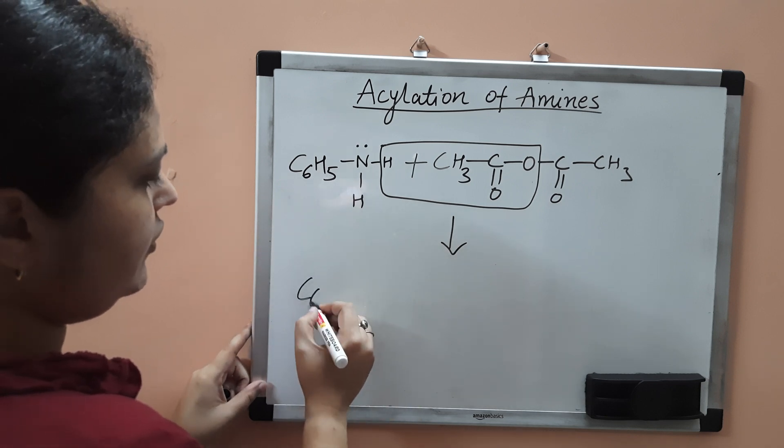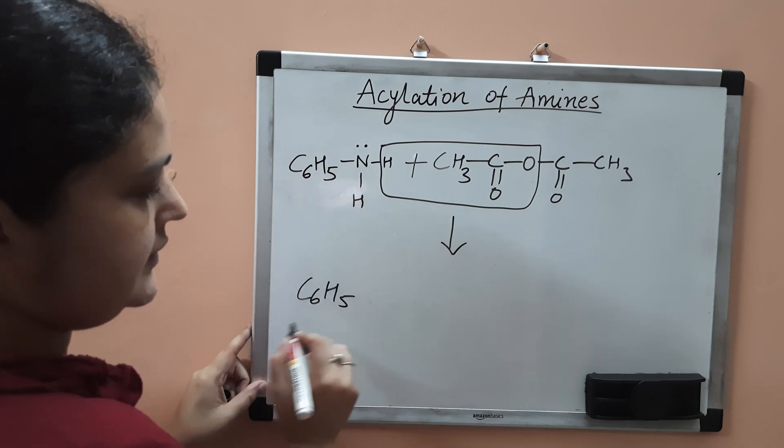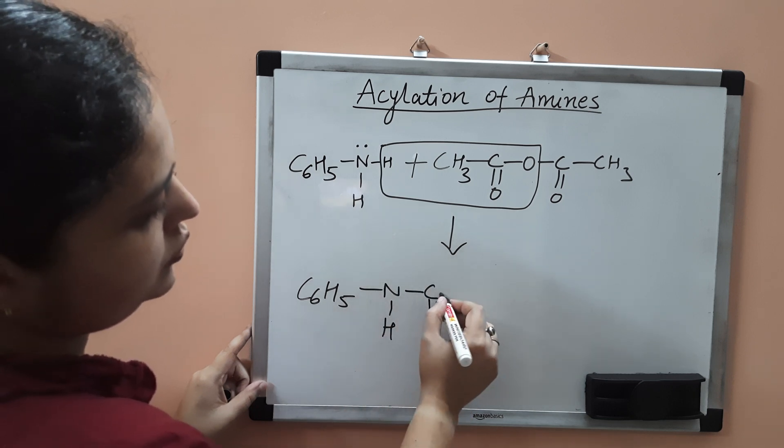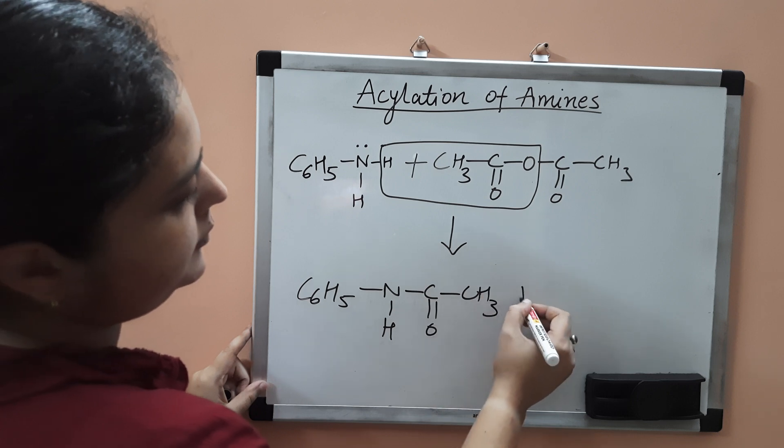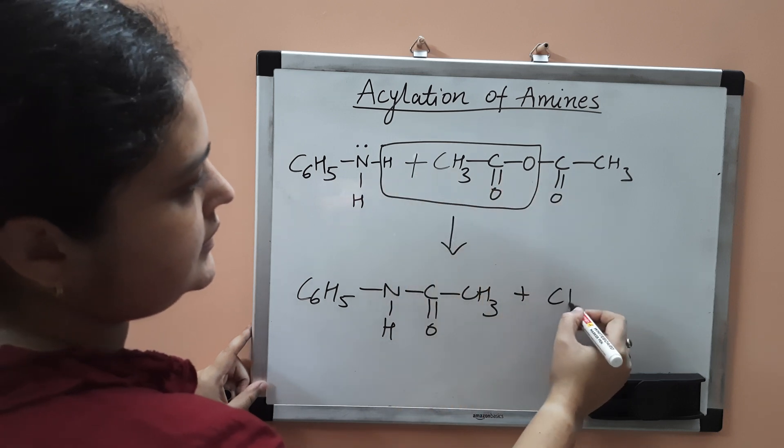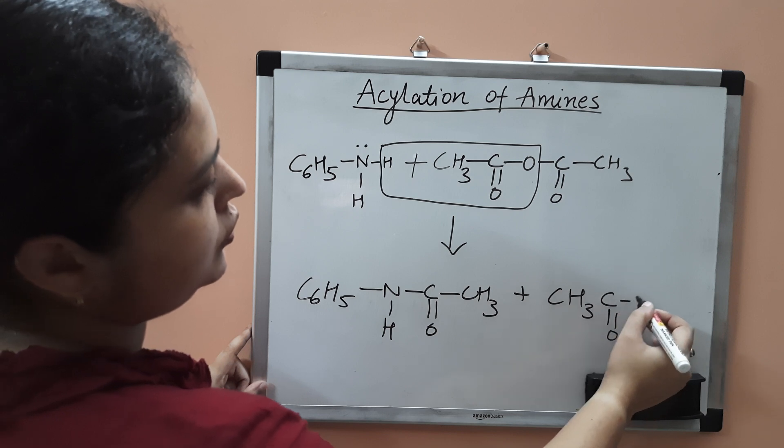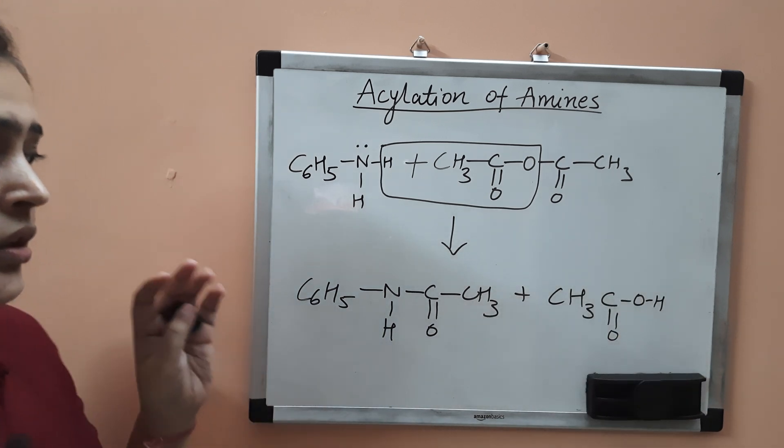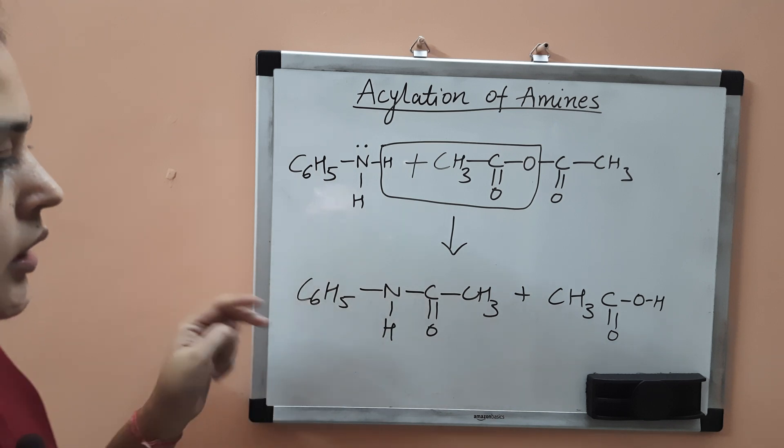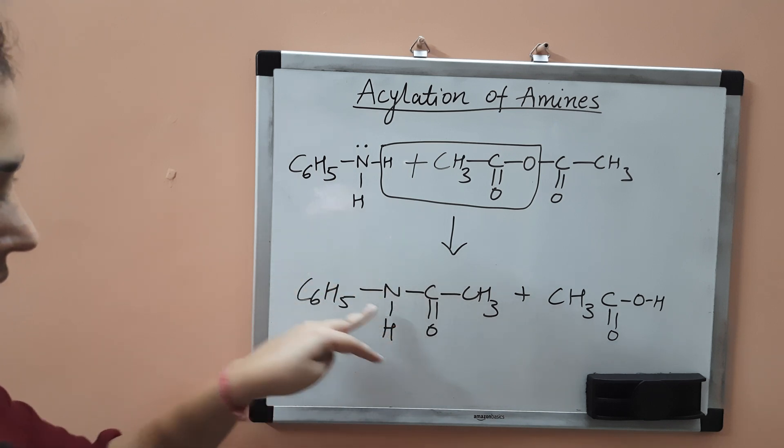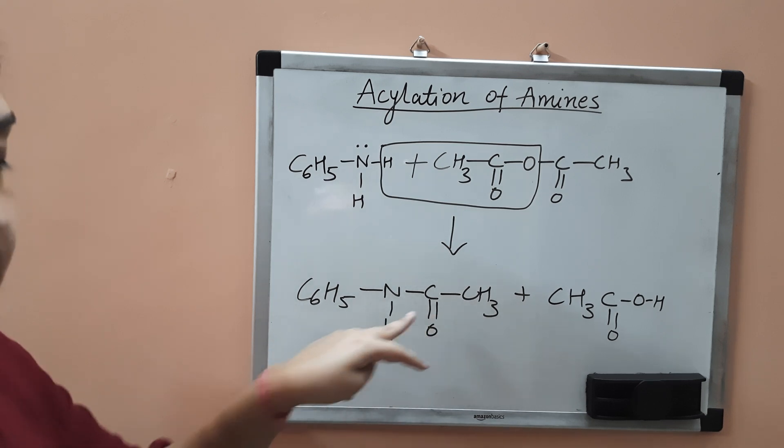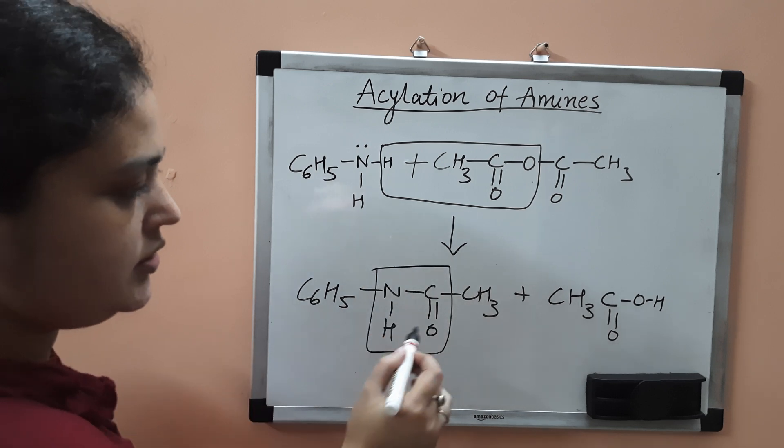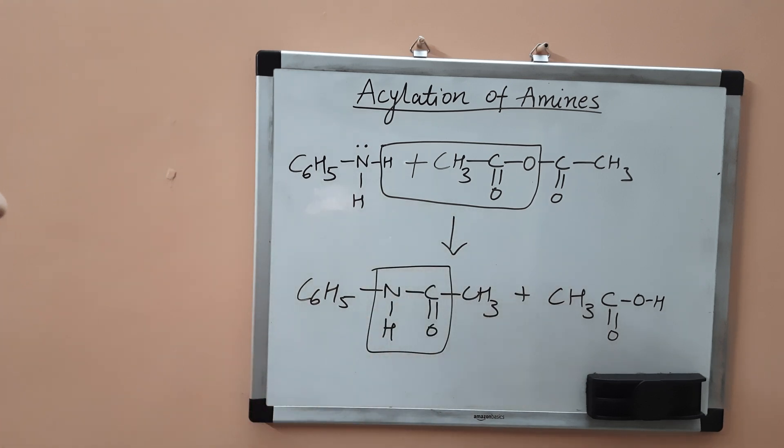This will be formed as C6H5NHC double bond OCH3 plus CH3C double bond OOH. This is N-phenyl ethane amide. This is an amide due to the NHCO or CONH bond.